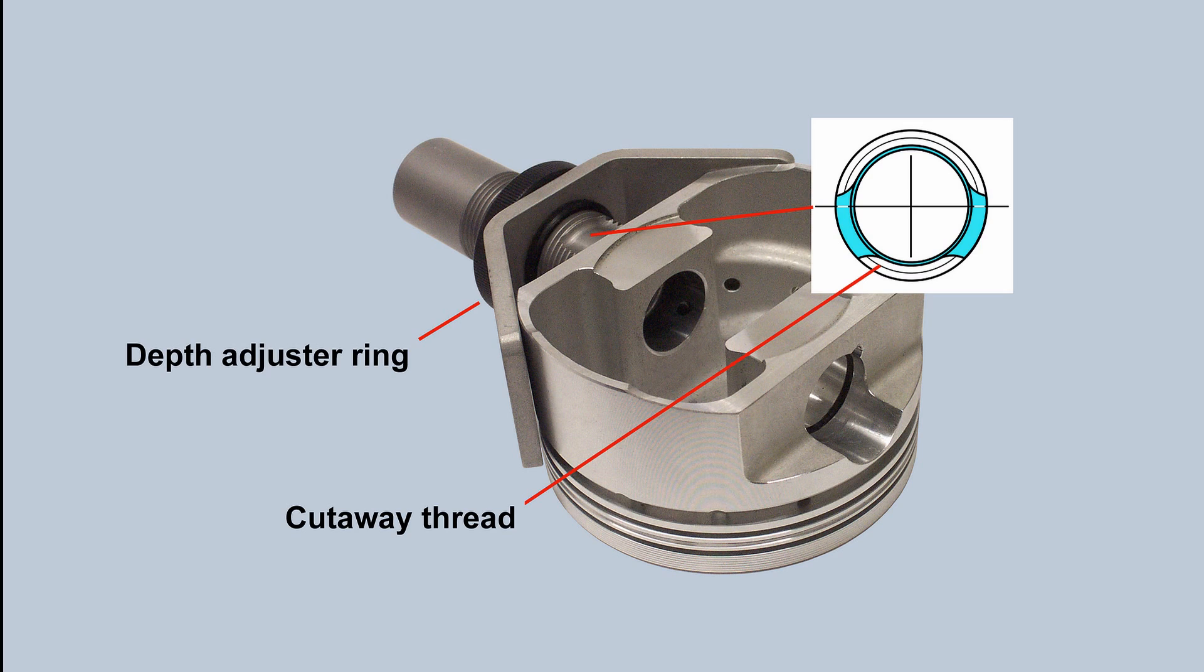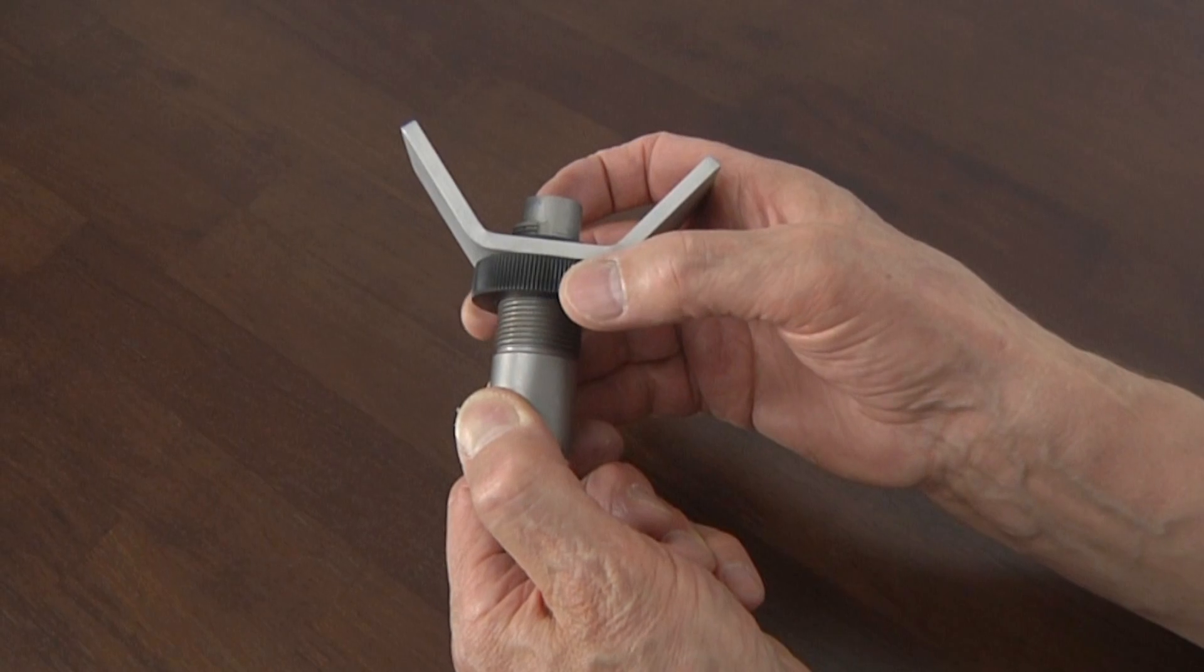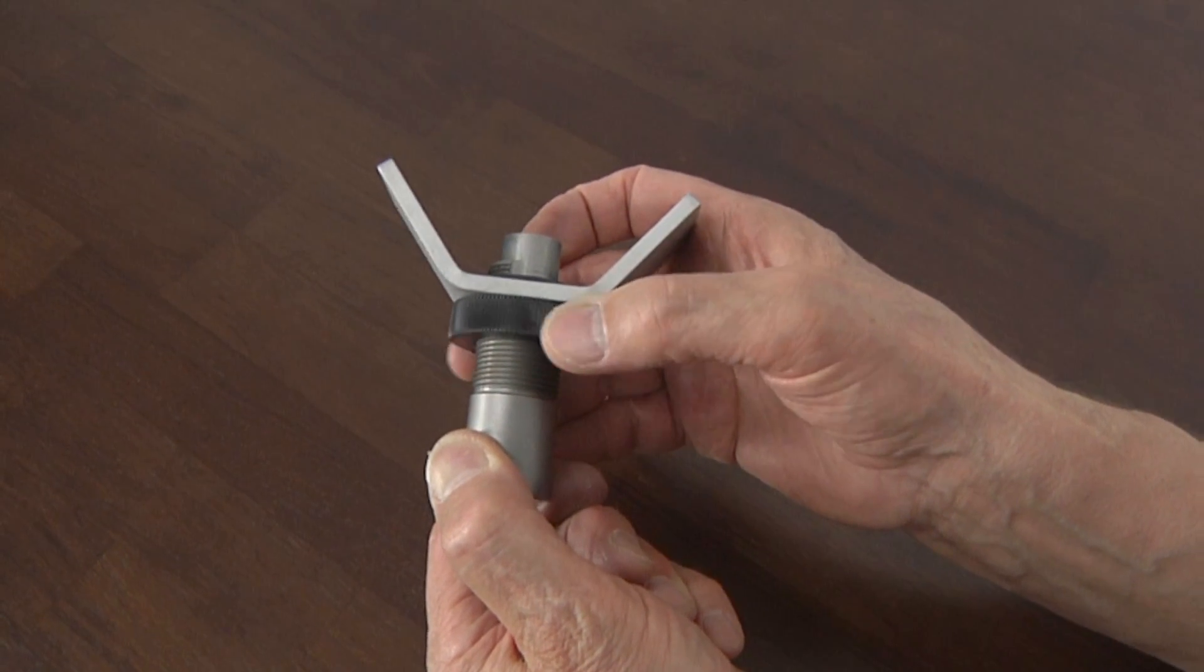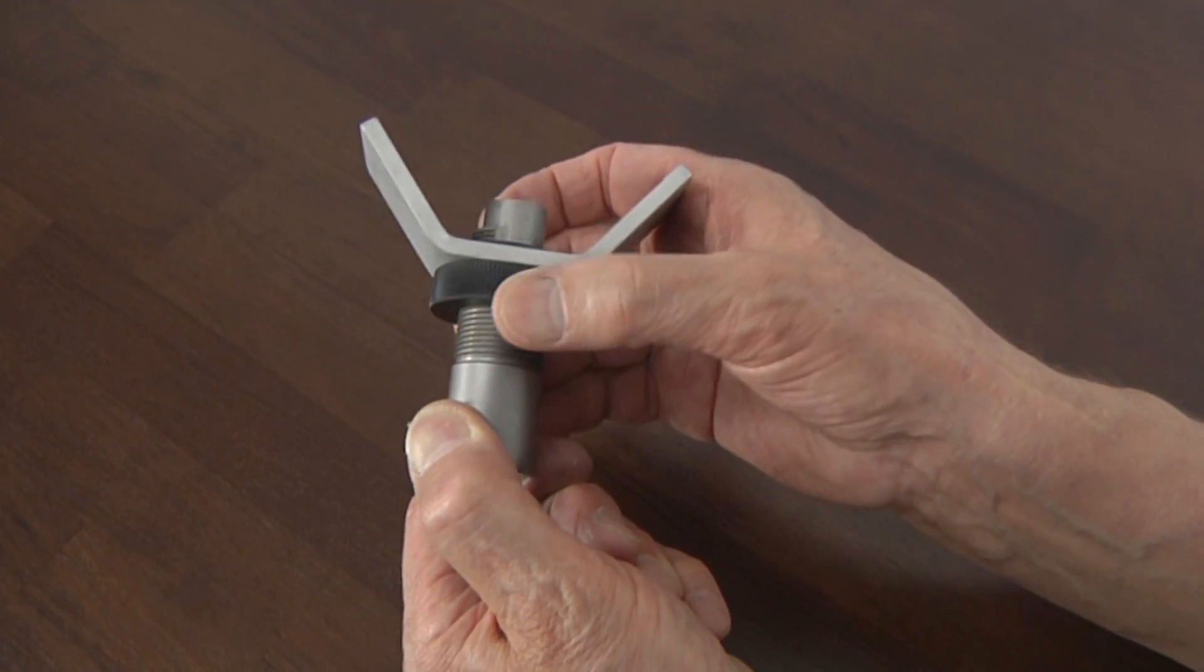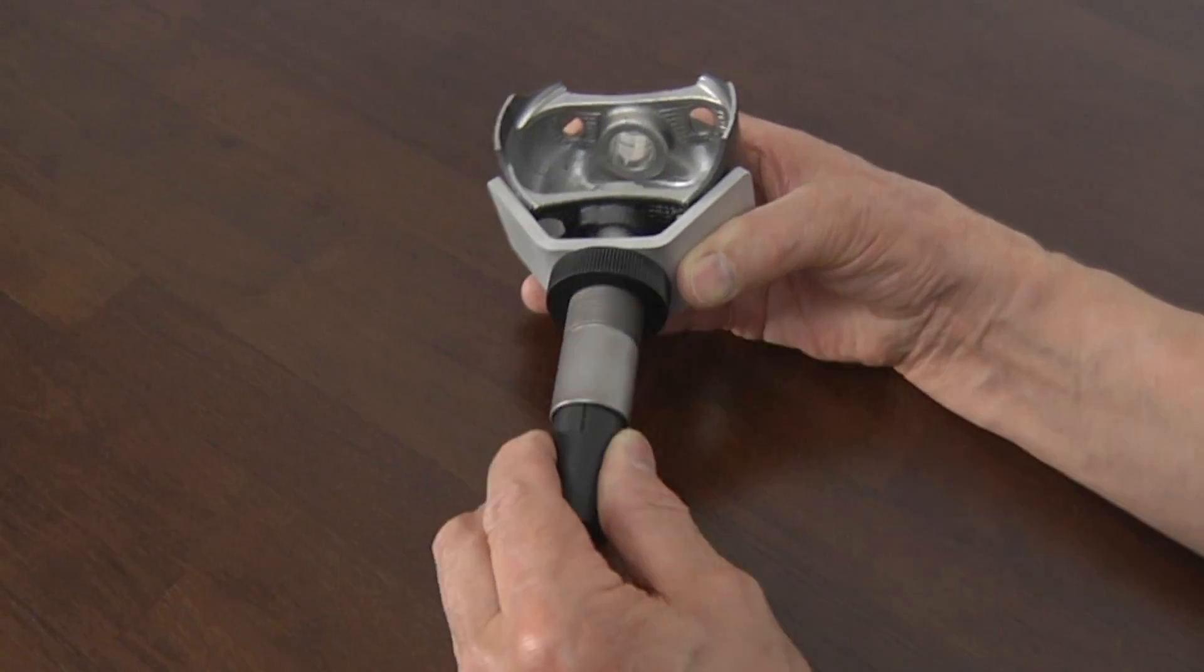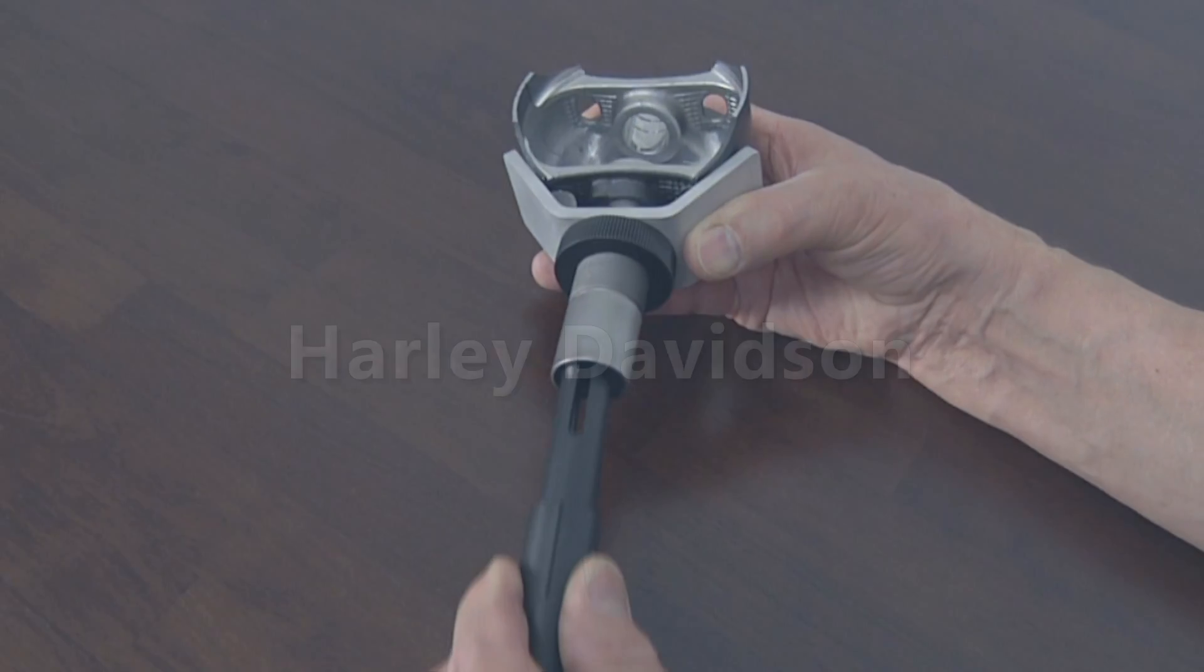The cutaway sleeve needs a different way of setting depth. Instead of rotating the sleeve itself, we use a rotatable depth adjuster ring that's captive in an aluminum V-guide. Aside from that, the procedure for four strokes is exactly the same as for two strokes and just as easy.